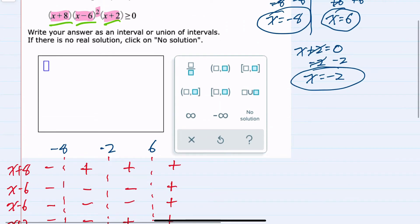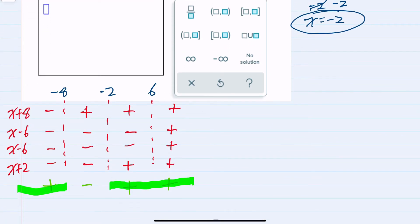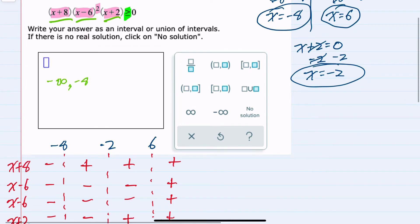Now that I have these signs, my original question is where this polynomial is greater than or equal to 0. So where is it positive? It is positive to the left of negative 8, and that would be negative infinity to negative 8. And I'm going to use inclusive, since it has an equal sign. It could be equal to 0. I'll use inclusive around the negative 8.